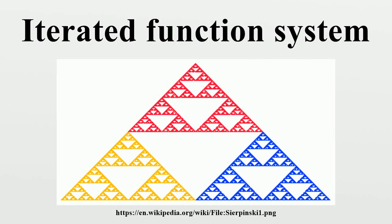In mathematics, iterated function systems are a method of constructing fractals. The resulting constructions are always self-similar. IFS fractals, as they are normally called, can be of any number of dimensions, but are commonly computed and drawn in 2D. The fractal is made up of the union of several copies of itself, each copy being transformed by a function. The canonical example is the Sierpinski gasket, also called the Sierpinski triangle.